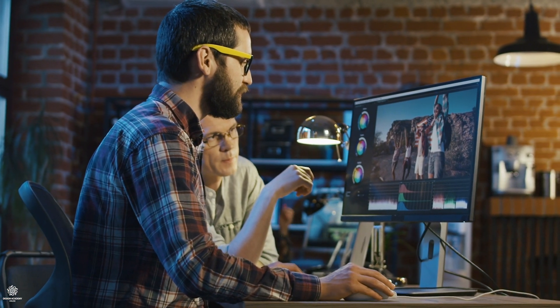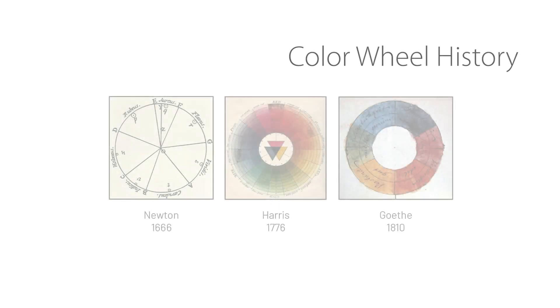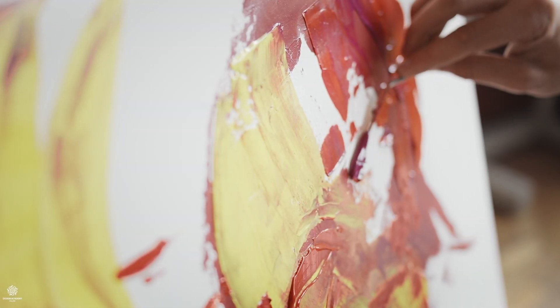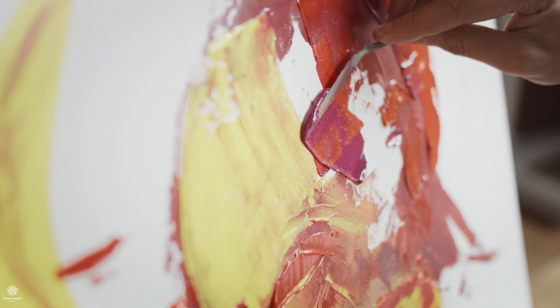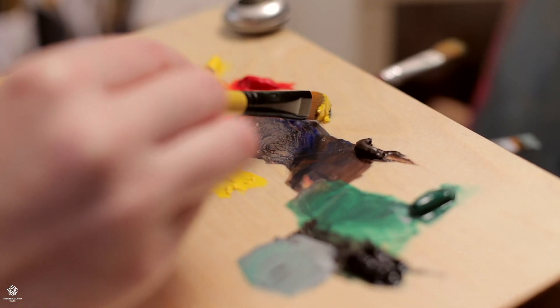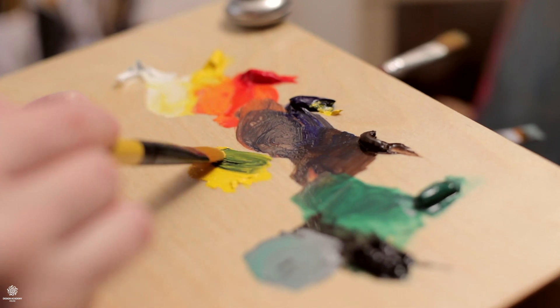Starting with color wheel basics — the first color wheel was designed by Sir Isaac Newton in 1666. He's famous for his work in physics, but he also designed the first color wheel. Since then, the color wheel has been developing, and artists and designers still use it to develop their color harmonies, mixing, and palettes.